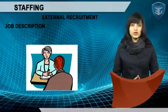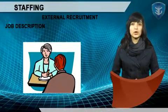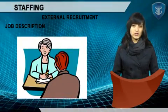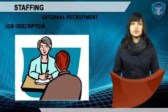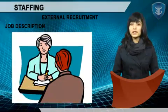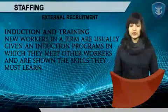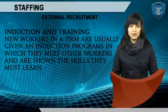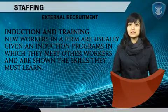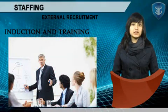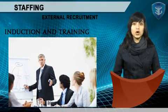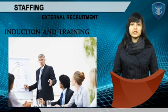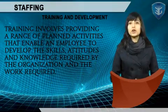A job description sets out how a particular employee will fit into the organization — a simple description of the role and duties within the organization that can also be used as a job indicator for applicants. New workers are usually given an induction program in which they meet other workers and are shown the skills they must learn. Training takes place in two ways: on the job, learning skills through experience at work; and off the job, learning through attending courses.